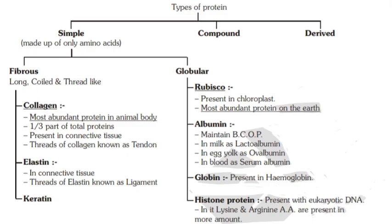Proteins are broadly classified into three types: simple proteins, compound proteins, and derived proteins. Simple proteins are made up of only amino acids and are broadly classified into two types: fibrous proteins and globular proteins.